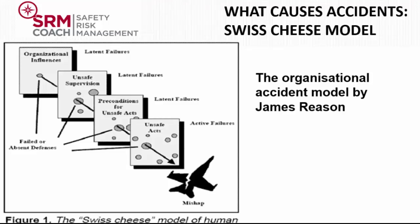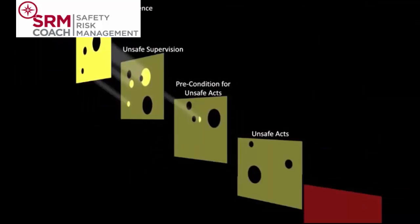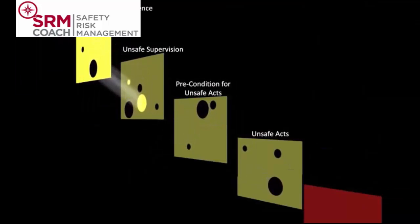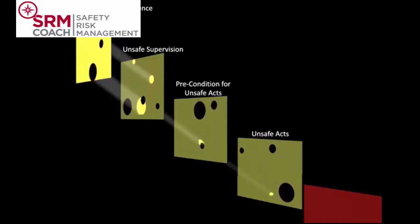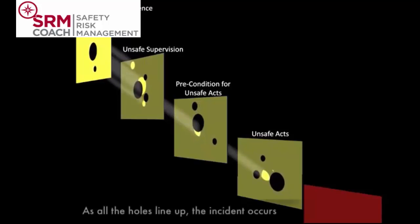The model developed by James Reason helps to analyze how accidents in organizations happen. The model reflects that we have different defenses in our organization at different levels. When something goes wrong, it is usually not only caused by one person doing something wrong — our system should have defenses against that. But if these defenses are weak, like the holes in the Swiss cheese, it is more likely that an unsafe act could lead to an accident.